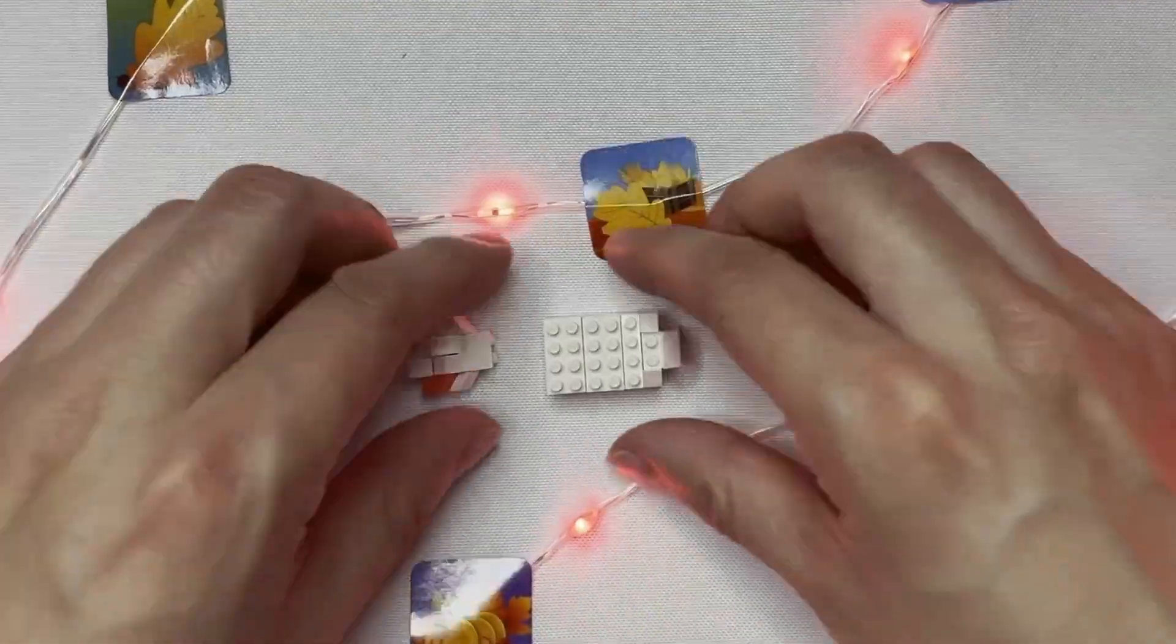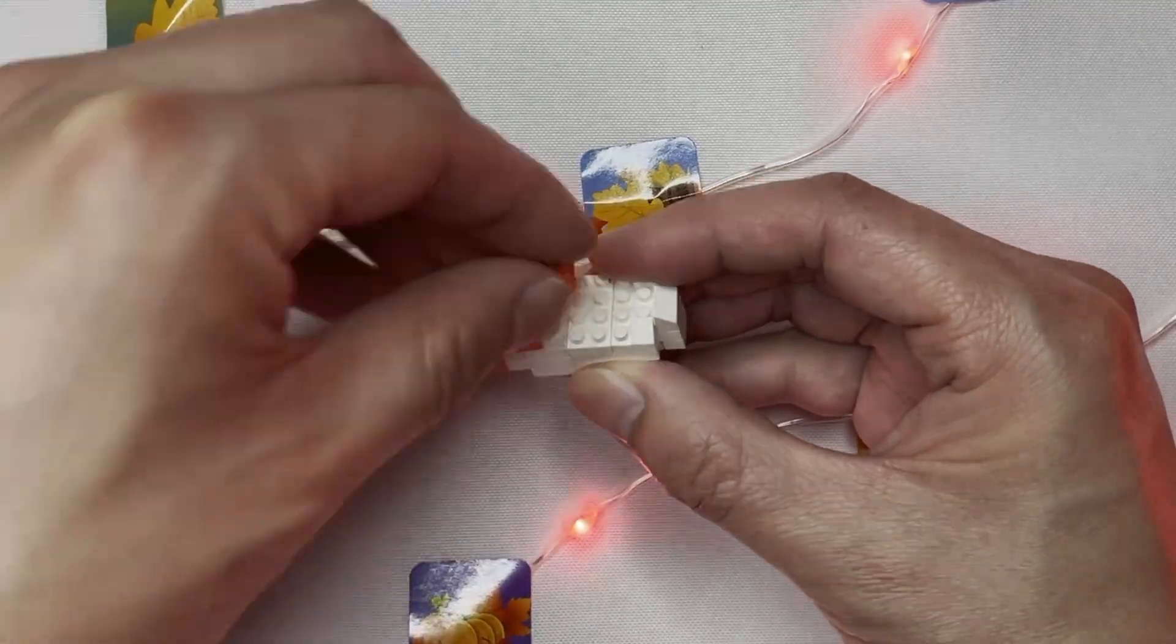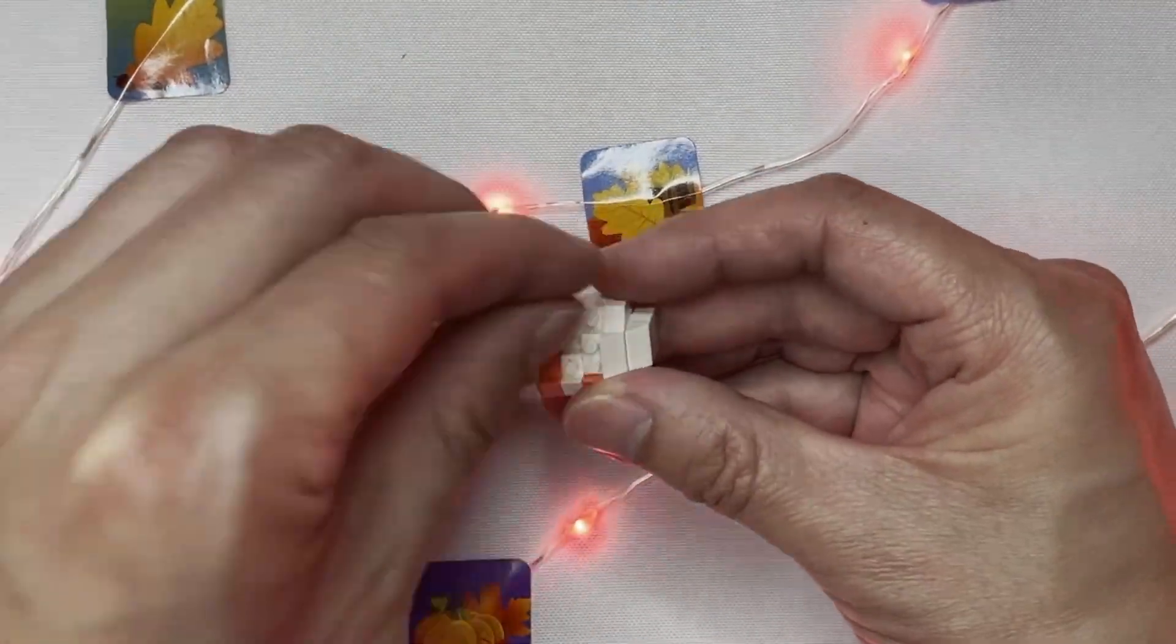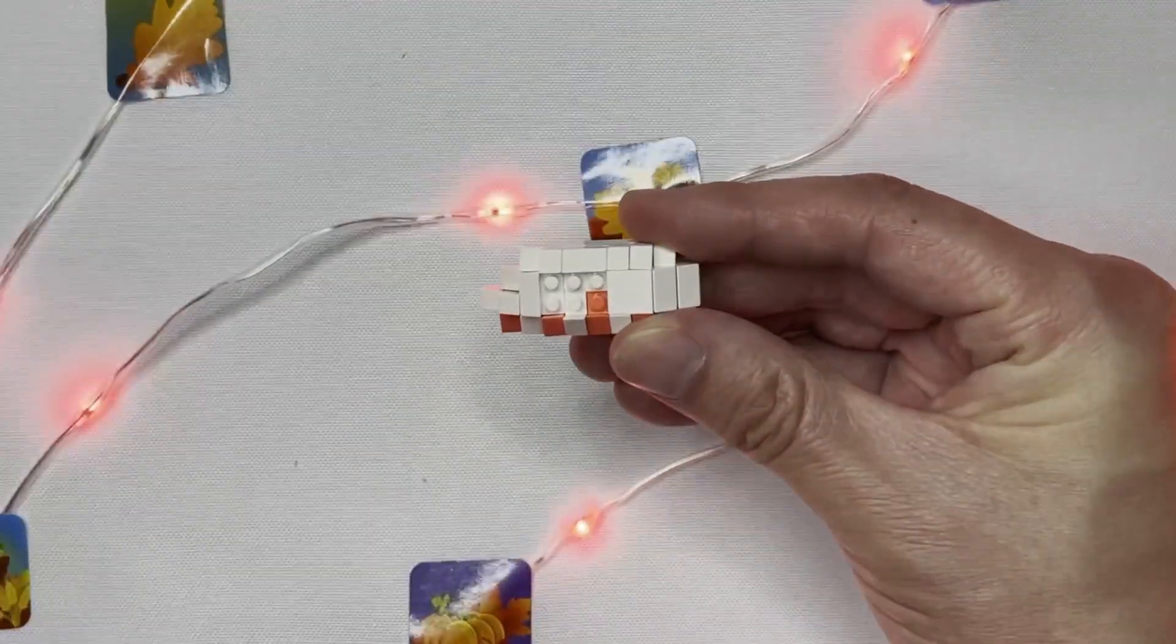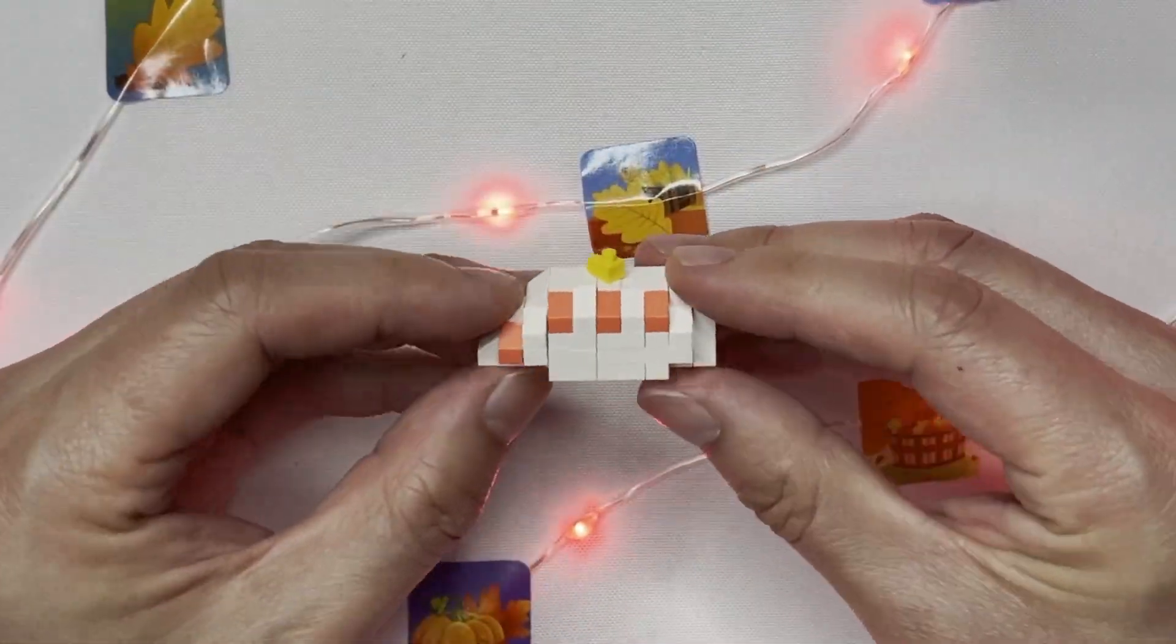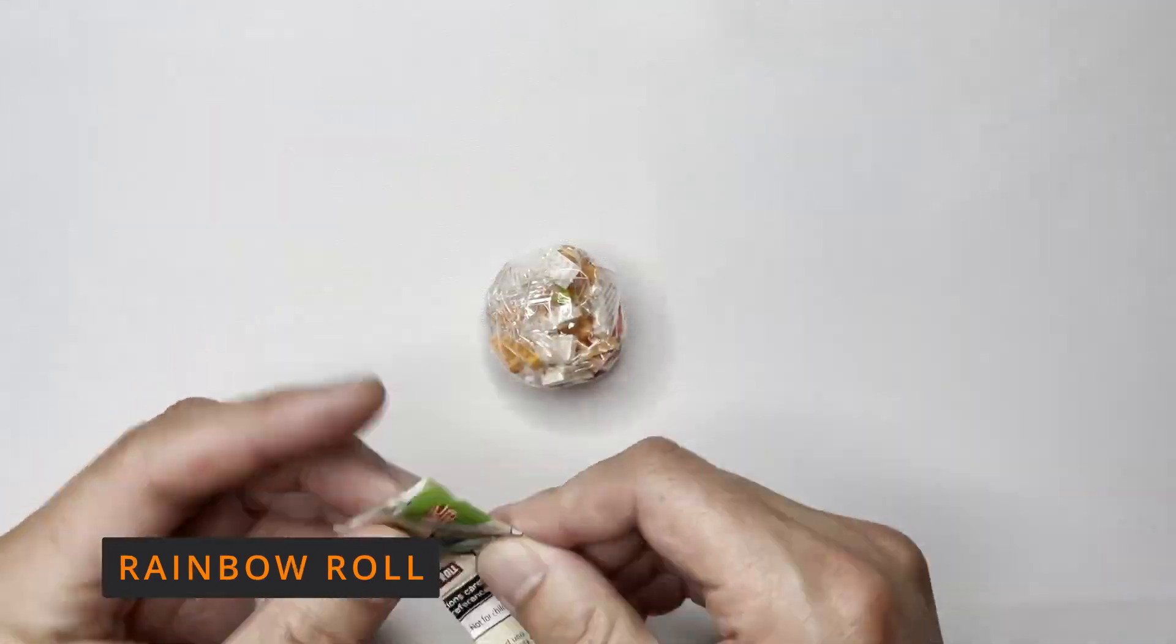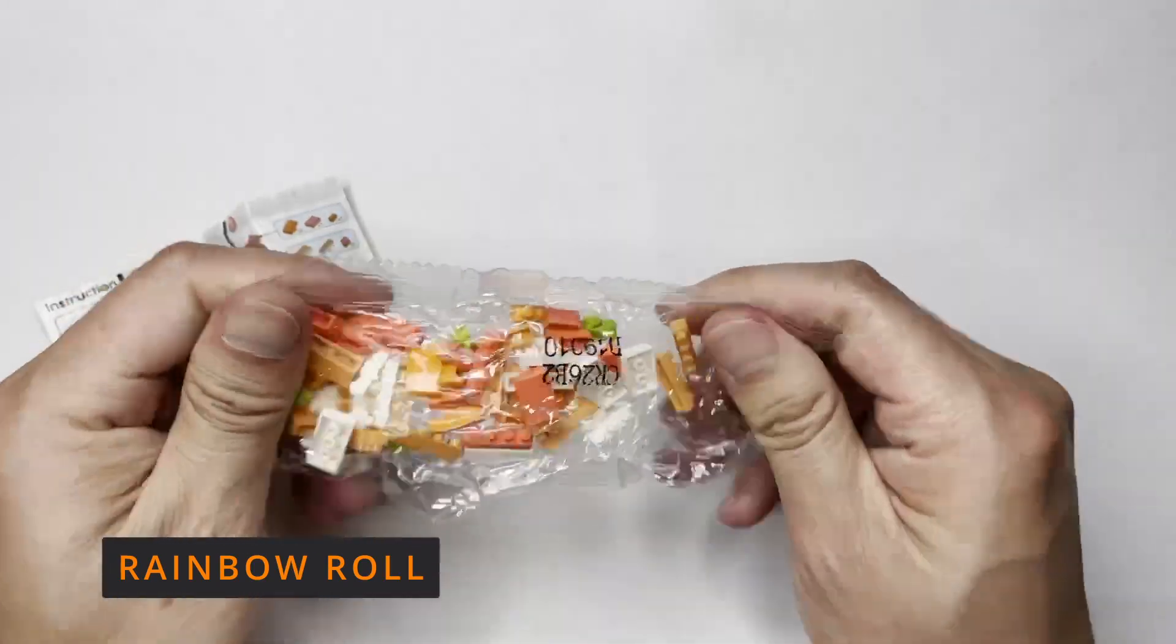So first we are going to be building a red snapper with yuzu pepper on top, then the second model we are going to be featuring is a rainbow roll, then the third piece of sushi we are going to feature is a capamaki or otherwise known as a cucumber roll, and finally we will finish off the video with the spanish mackerel which was the most frustrating out of the four to build as you can see later on.